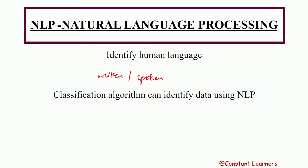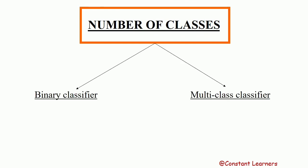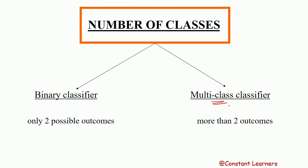Depending on the number of classes, data can be grouped using two types of classifiers: binary classifier and multi-class classifier. If there are only two categories, two classes, or two possible outcomes, we call it a binary classifier. If there are more than two categories or more than two outcomes, we call it a multi-class classifier.